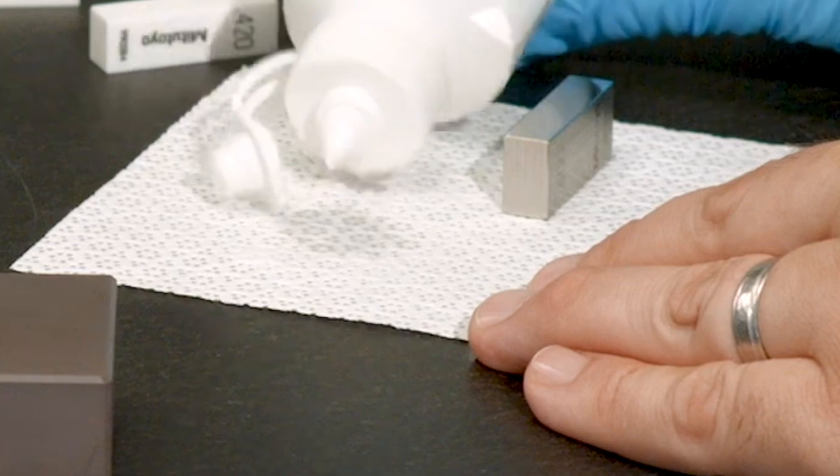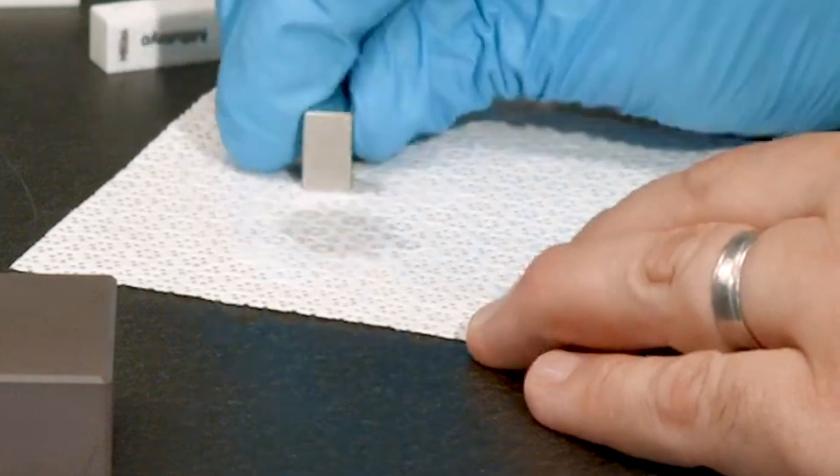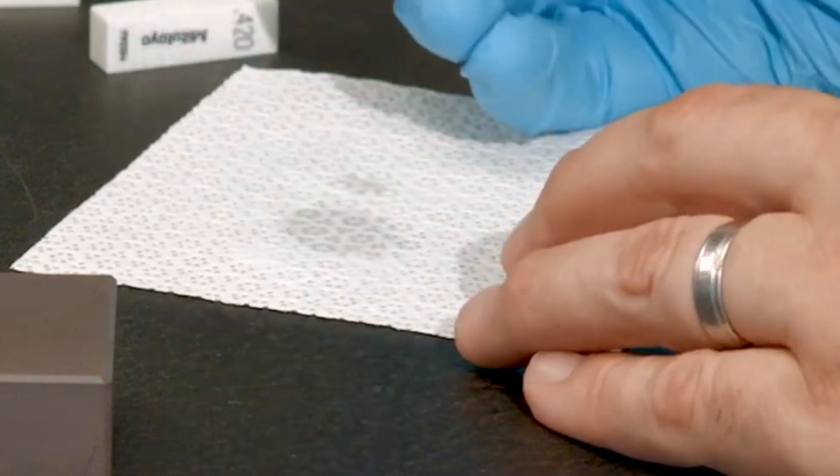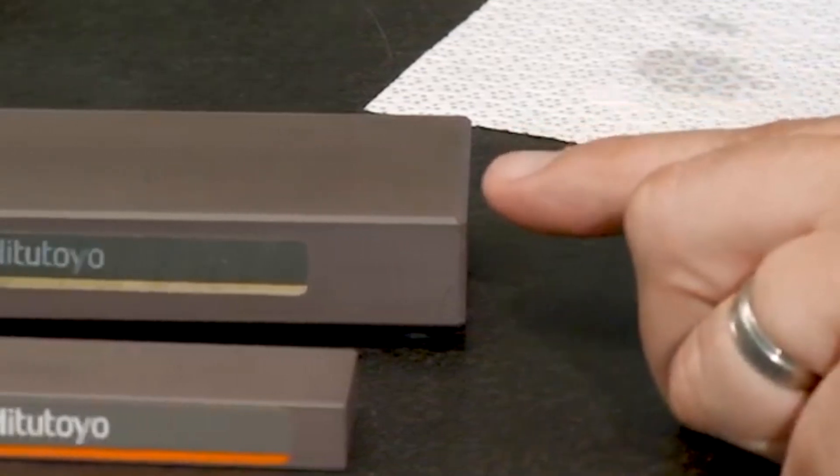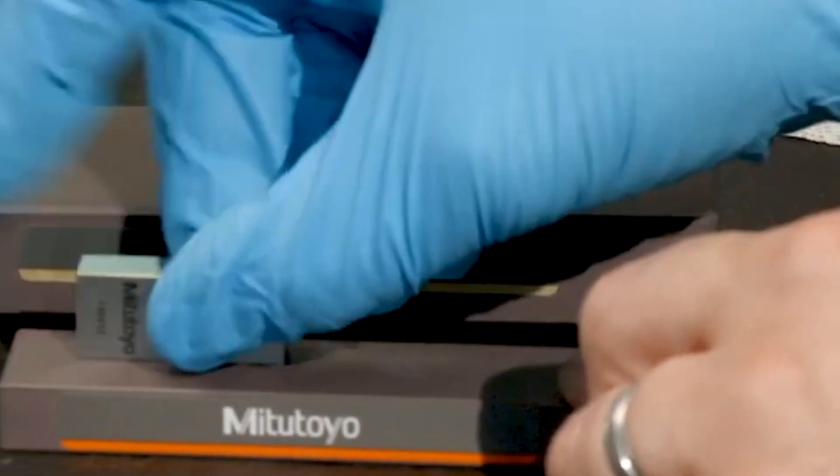First, I'll use some denatured alcohol to clean the block. And then I'll use this Mitutoyo Serastone to remove any burrs. This is sometimes called conditioning the block.